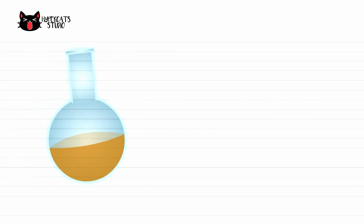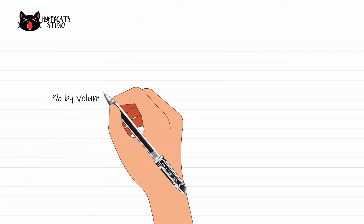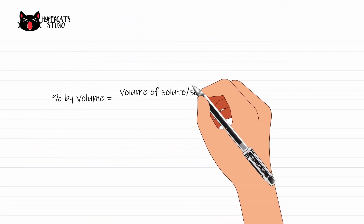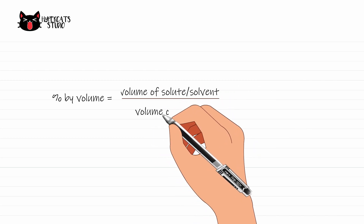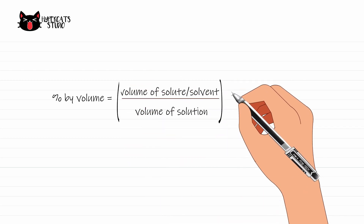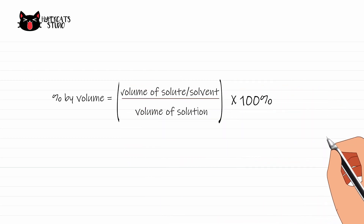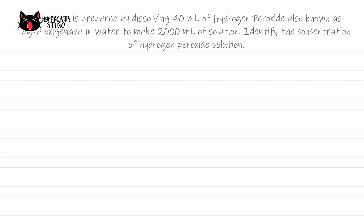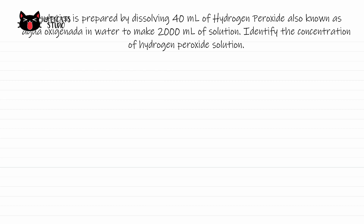Percent in solutions can also be expressed in volume when the solute is a liquid. Percent by volume equals volume of solute over the total volume of solution, times 100%. For example, a solution is prepared by dissolving 40 milliliters of hydrogen peroxide — also known as agua oxygenada — in water to make 2000 milliliters of solution.